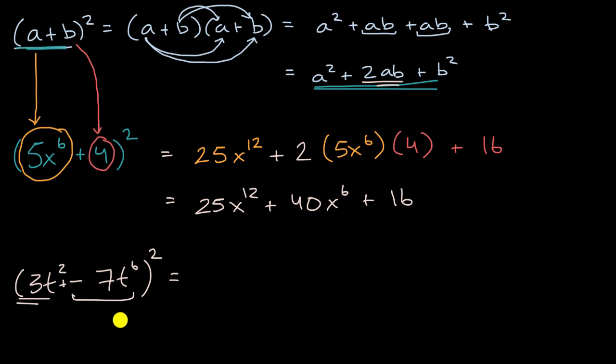So this is going to be equal to a squared, which is 9t to the fourth, plus 2 times this times this. 2 times a times b. So 2 times 3t squared is going to be 6t squared times negative 7t to the sixth. Actually, let me write this out. This is getting a little bit complicated. So this is going to be plus 2 times 3t squared times negative 7t to the sixth power.